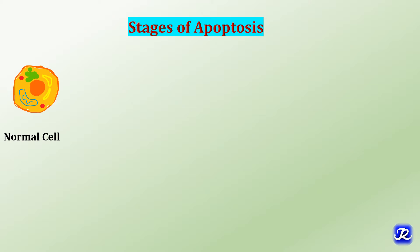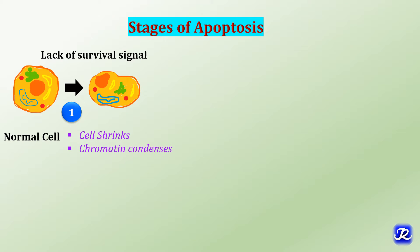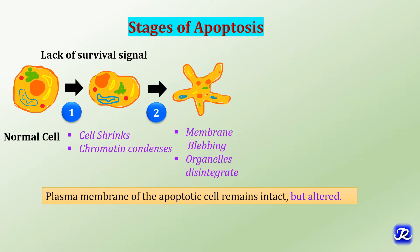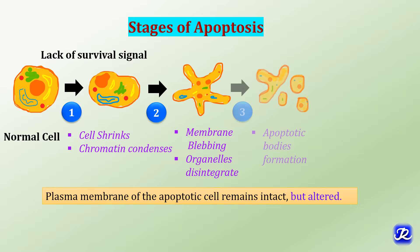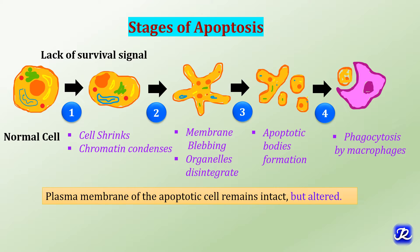Pathological apoptosis occurs when there is DNA damage or accumulation of misfolded proteins. There are four stages of apoptosis. In the first stage, lack of survival signal or DNA/protein damage activates the process; the cell shrinks and chromatin condenses. In the second stage, the plasma membrane remains intact but is altered, forming membrane blebs, and organelles inside the cell disintegrate. In the third stage, apoptotic bodies form, and in the fourth stage, phagocytosis by macrophages occurs.